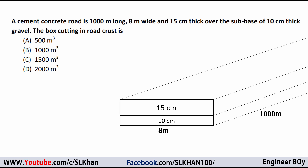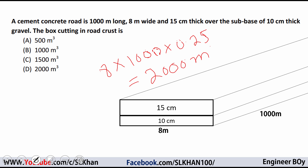Another one: a cement concrete road is 1,000 meters long, 8 meters wide, and 15 centimeters thick, with a sub-base of 10 centimeters thick gravel. The box cutting in road crust is 500 cubic meters. I'm happy with option D. The volume equals width times length times thickness: 8 meters times 1,000 meters times 0.25 meters (15 cm + 10 cm = 25 cm = 0.25 m), which gives 2,000 cubic meters. So option D is correct.